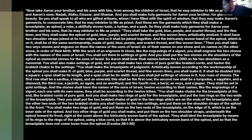'You shall make the breastplate of judgment, artistically woven of gold, blue, purple and scarlet thread and fine woven linen, doubled into a square, a span its length and a span its width. You shall put settings of stones in it — four rows: the first row sardius, topaz, emerald; the second row turquoise, sapphire, diamond; the third row jacinth, agate, amethyst; and the fourth row beryl, onyx, jasper — set in gold settings. The stones shall have the names of the sons of Israel, twelve according to their names like the engravings of a signet, each with its own name, according to the twelve tribes.'